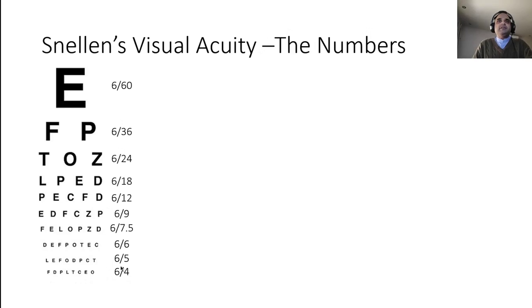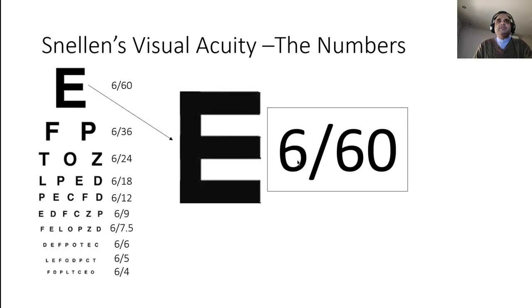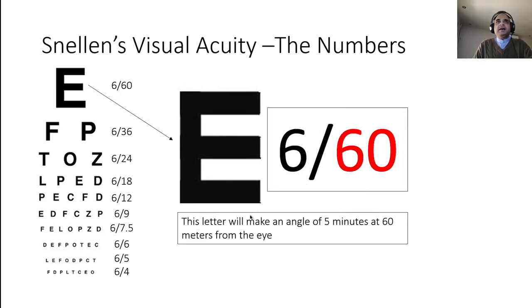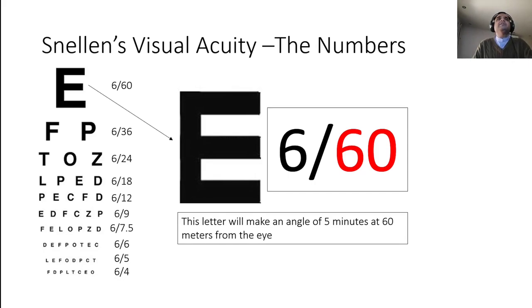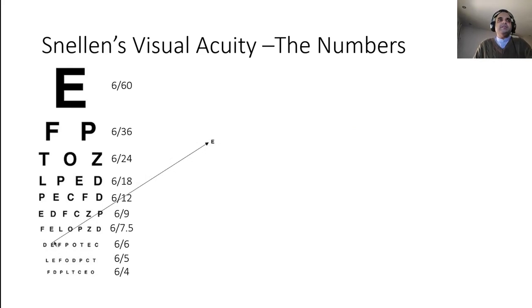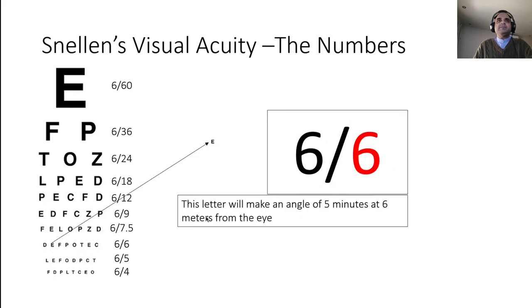The numbers on a Snellen letter chart: the top letter is called the '60' letter. This means at 60 meters, the letter makes an angle of five minutes at the fovea. The '6/6' line means at six meters, that letter makes an angle of five minutes at the fovea. All letters are calibrated so that at the denominator distance, the letter subtends five minutes at the fovea.